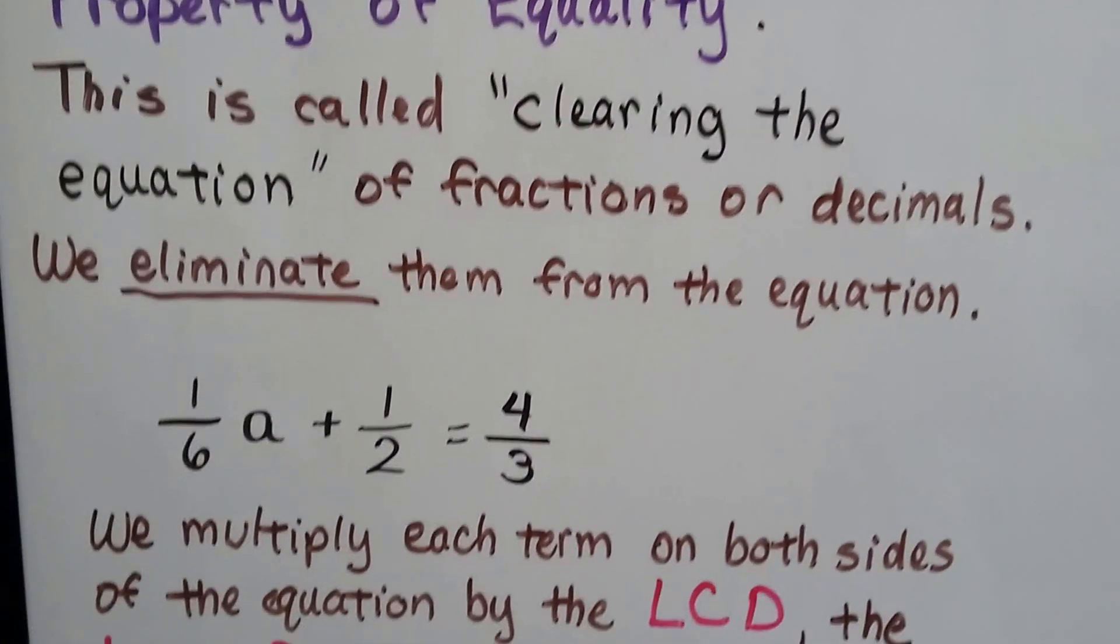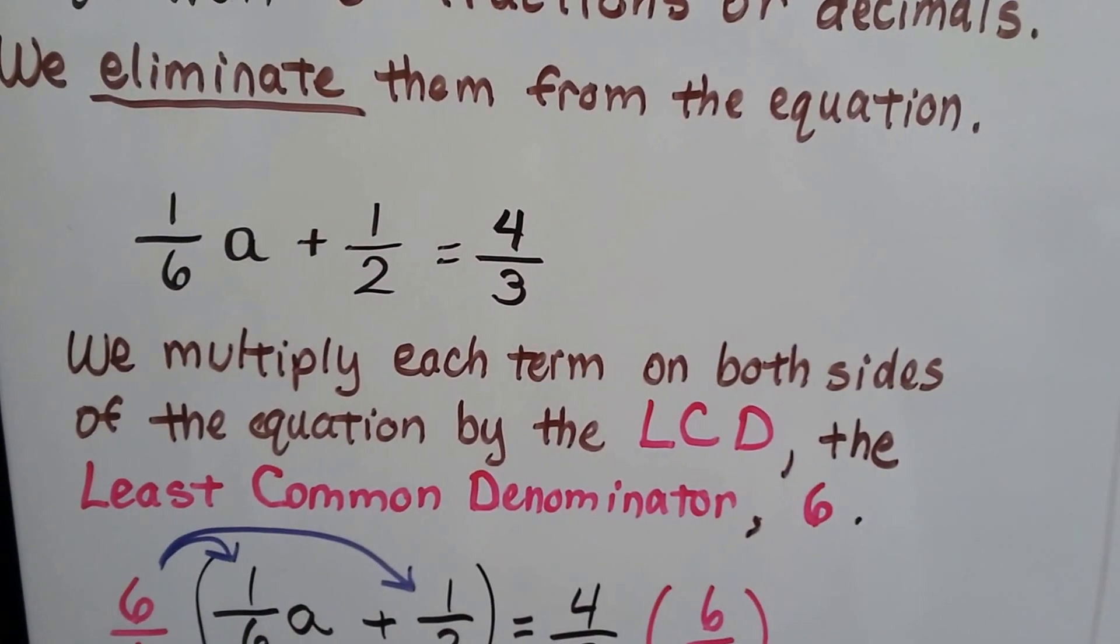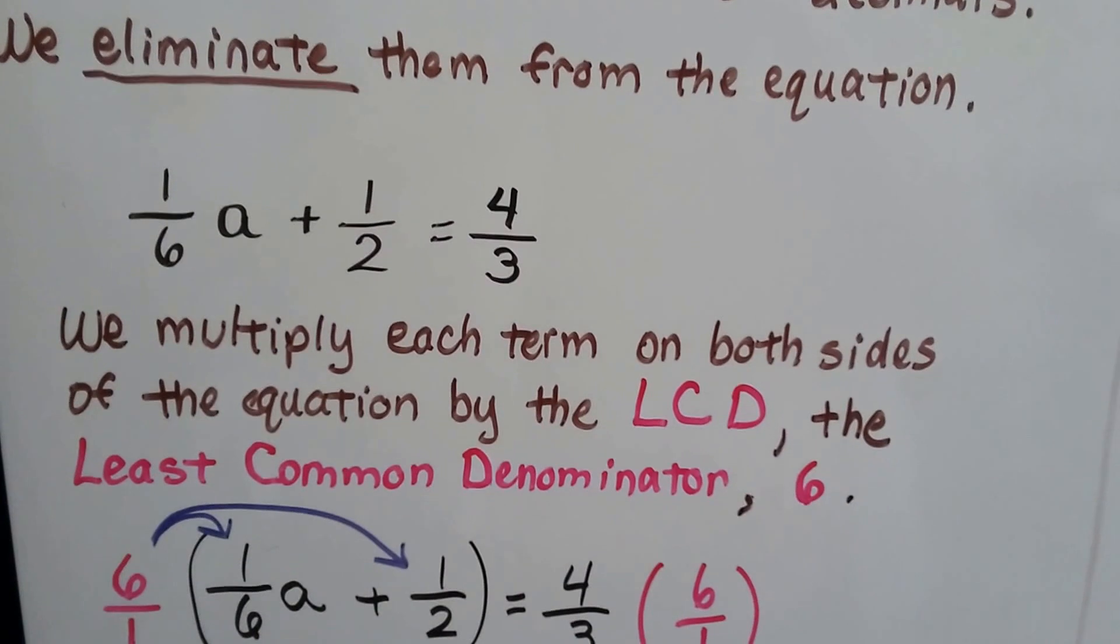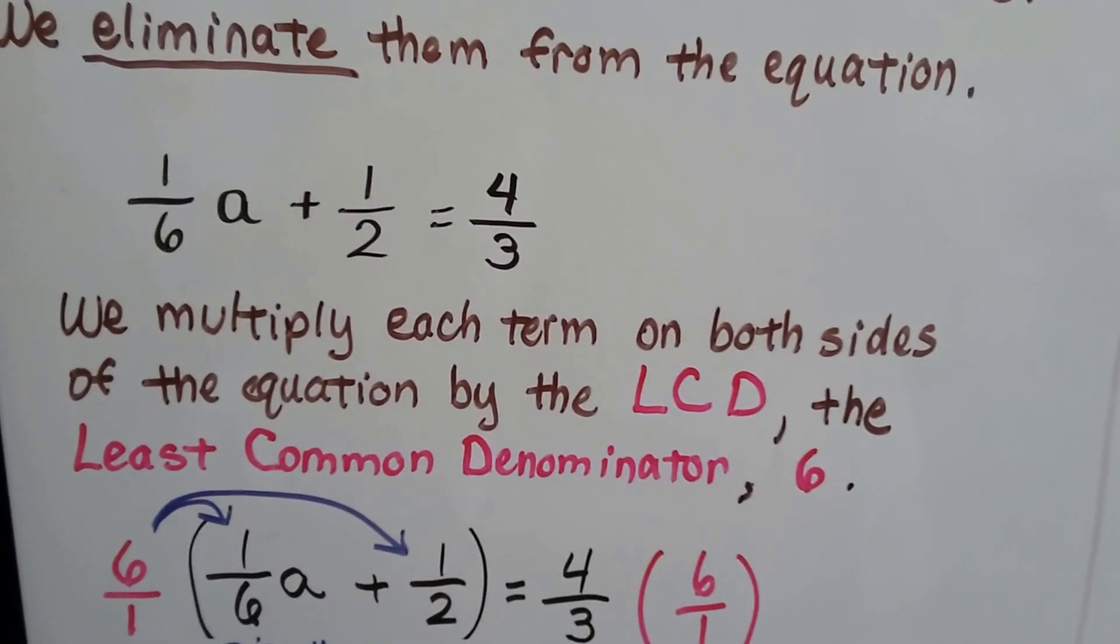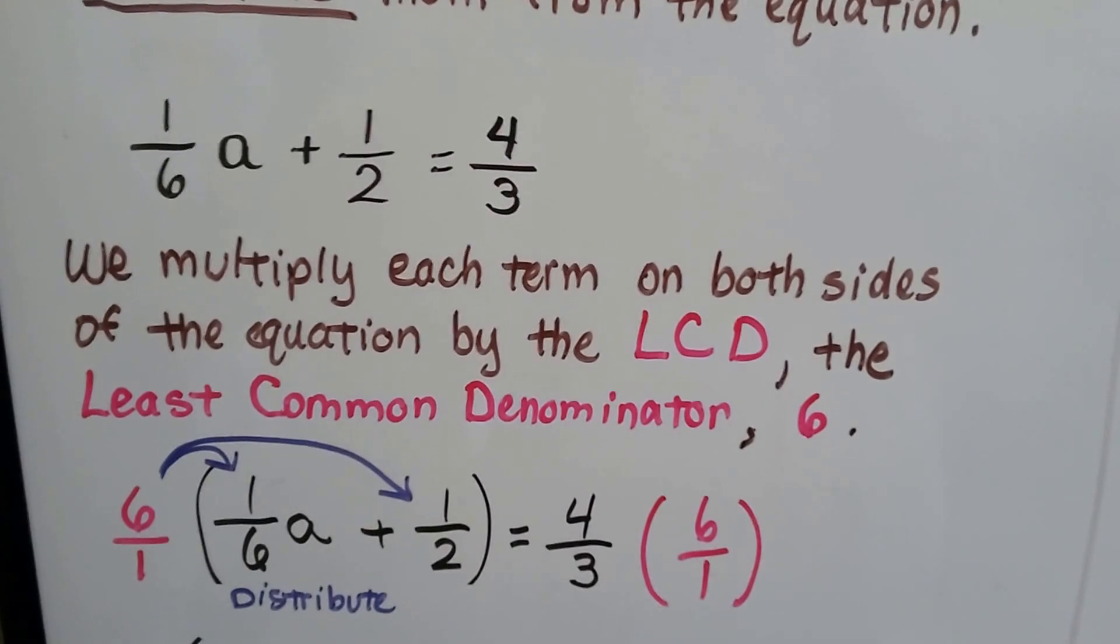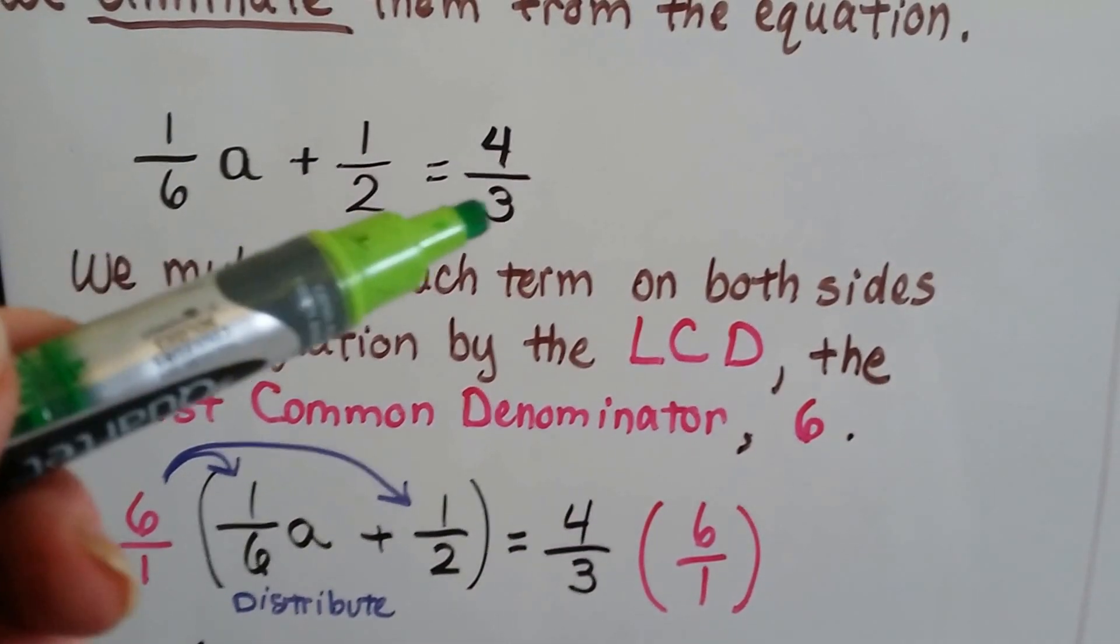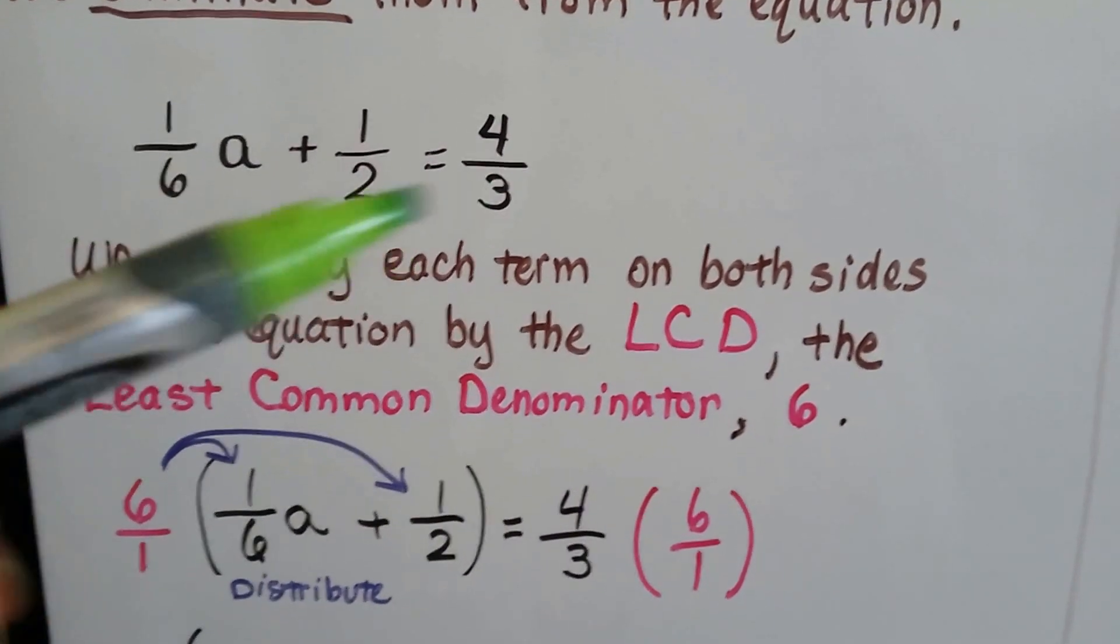We eliminate them from the equation. So if we see fractions like 1/6a plus 1/2 equals 4/3, we just multiply each term on both sides of the equation by the least common denominator, the LCD. So 6 would be the least common denominator between 6, 2, and 3.